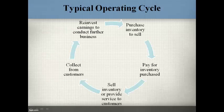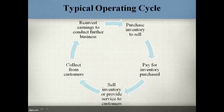A typical operating cycle begins with purchasing inventory to sell. The inventory is paid for and hopefully sold to customers. The customer pays for the inventory and the profits are reinvested in the business to purchase more inventory to sell to more customers. Hopefully the operating cycle continues and the company grows the business.